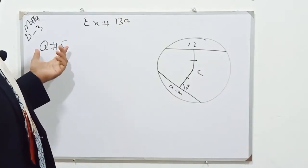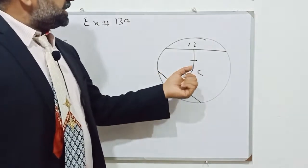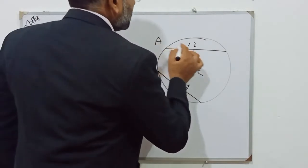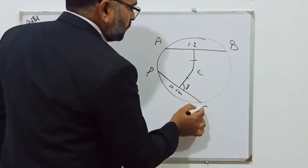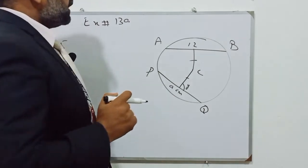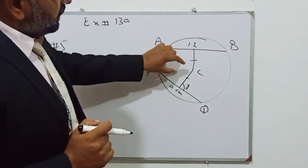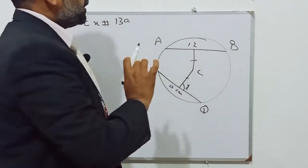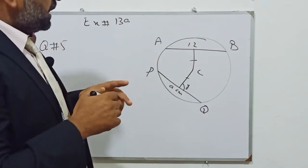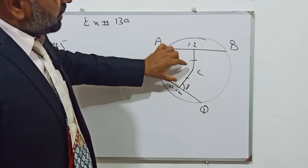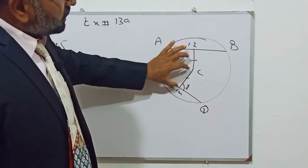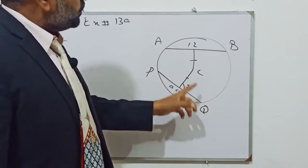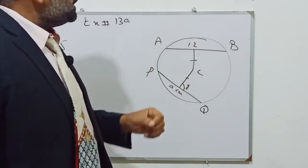Now students, in question number 5, this is a circle with center C and there are two chords: AB whose length is 12 centimeters, and PQ whose length is A, and we have to find the value of A. Both lines are perpendicular. Keep in mind that when two chords are equidistant from the center, then they will be equal, so PQ is equal to AB, and that is 12 centimeters.